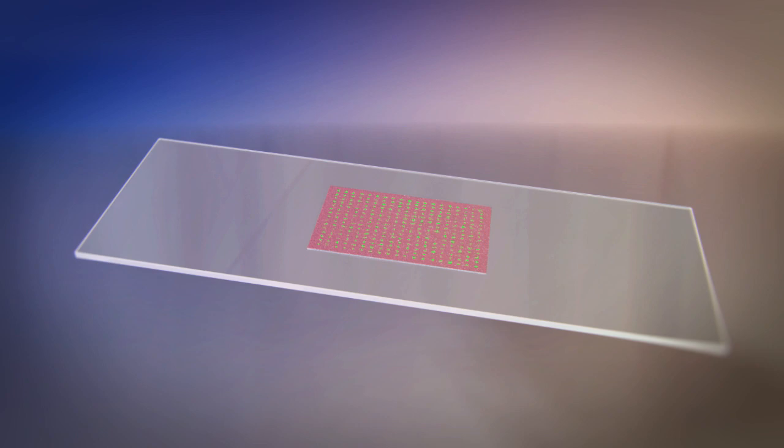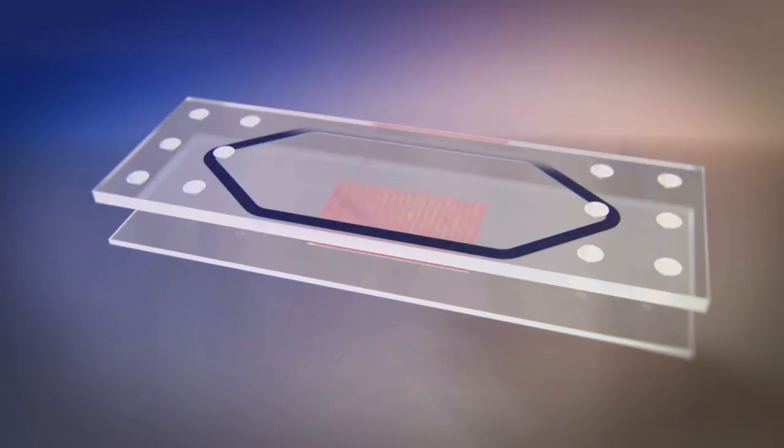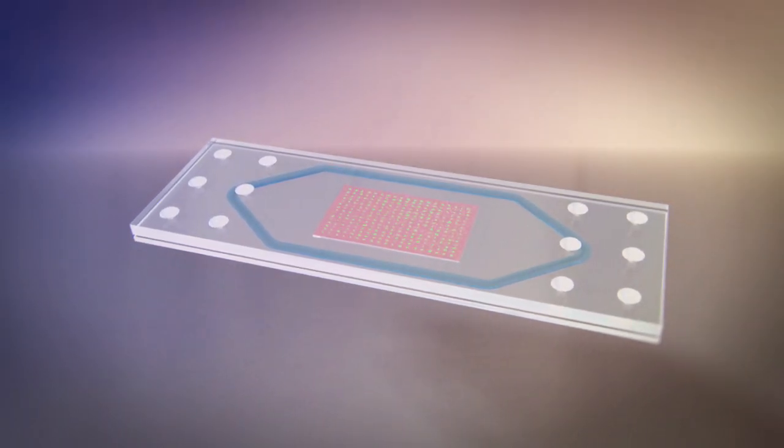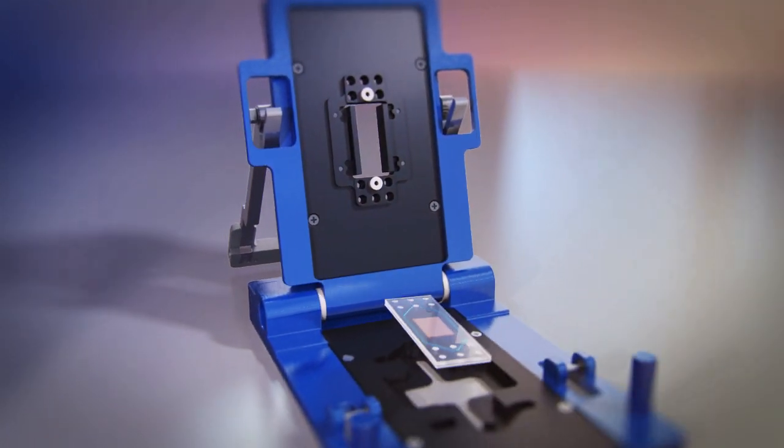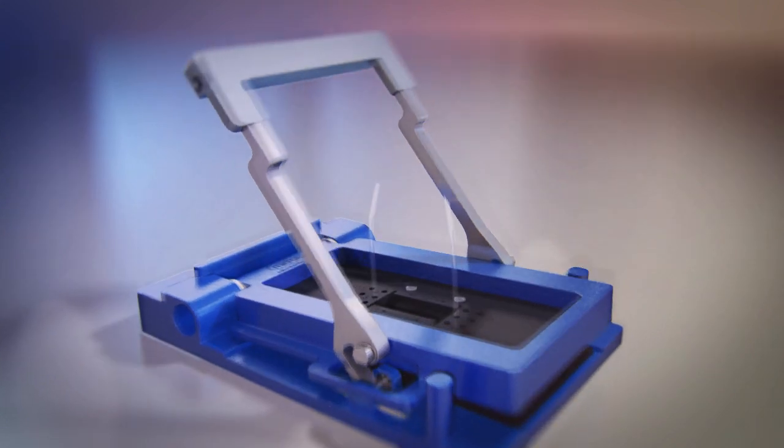First, the flow cell is assembled by placing a glass cover with a gasket on top of the cell array. This assembly is inserted into a flow cell holder. After closing the holder, a microfluidic connection is made, creating a continuous flow across the receptor cell array.